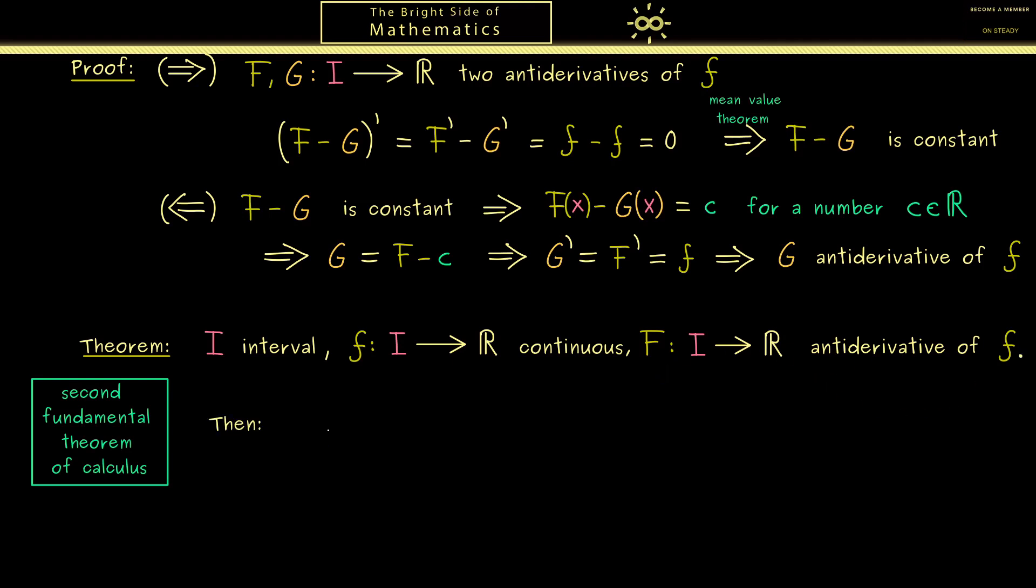And then the result is that we can calculate the Riemann integral of f from a to b. There of course the numbers a and b should be chosen from the interval I. And then we can say this integral of f here is equal to capital F(b) minus capital F(a).